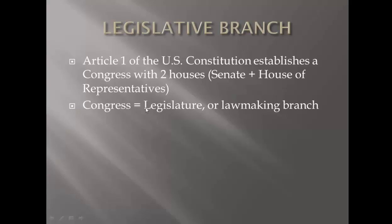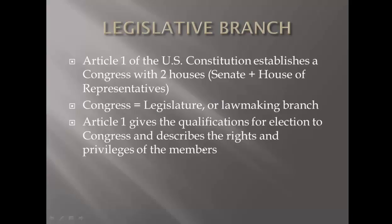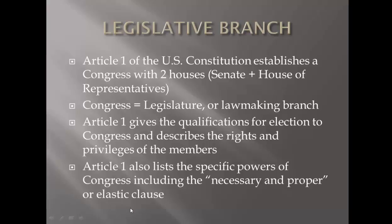An easy way to remember that: the L in legislature — legislate means to make laws. Article 1 gives the qualifications for election to Congress and describes the rights and privileges of its members. It talks about how you get into the Senate, how you become a senator, and how you become a member of the House of Representatives. After that, it distinguishes the rights of those congressmen and what they can and can't do. Article 1 also lists the specific powers of Congress, including the Necessary and Proper Clause — discussed in class as the Elastic Clause — which allows the government to be flexible.